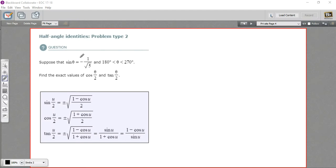In this problem, we've been given a value for sine of theta as a ratio and told what quadrant it's in. It's between 180 degrees and 270 degrees, so that's the third quadrant. And we're being asked to find the values of cosine of theta over 2 and tangent of theta over 2, so half of the value for sine.